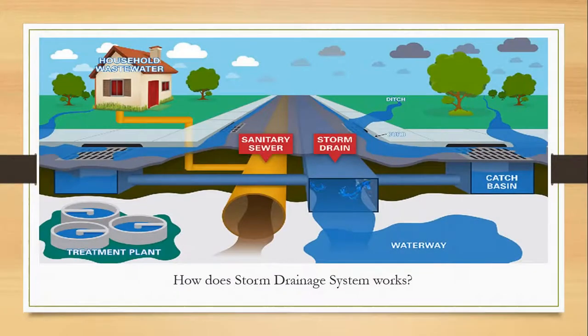A storm drainage system is designed to control, store, and infiltrate surface water, minimizing impact on the environment and preventing downstream flooding and deterioration in the quality of river water. How does a storm drainage system work?